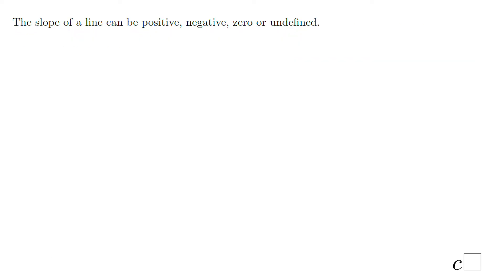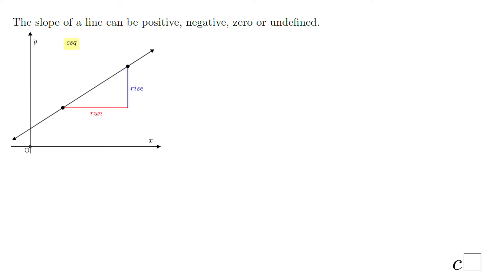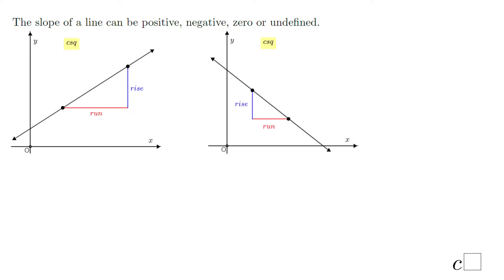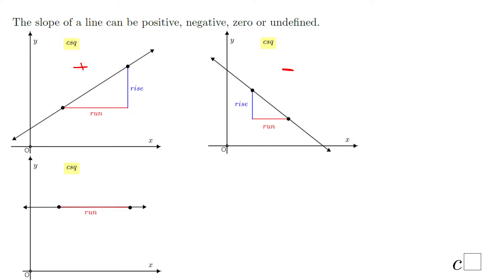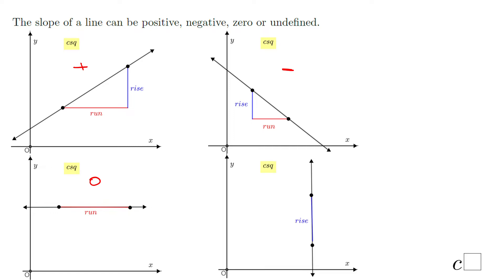Let's take a look at the four cases. First, when the line goes up from left to right, the slope will be positive. Second, when the line goes down from left to right, the slope is negative. Third, when you have a horizontal line, the slope is zero — there is only a run, no rise, that's why the slope is zero. And the last case: when you have a vertical line, there is only rise and no run, so the slope is undefined.